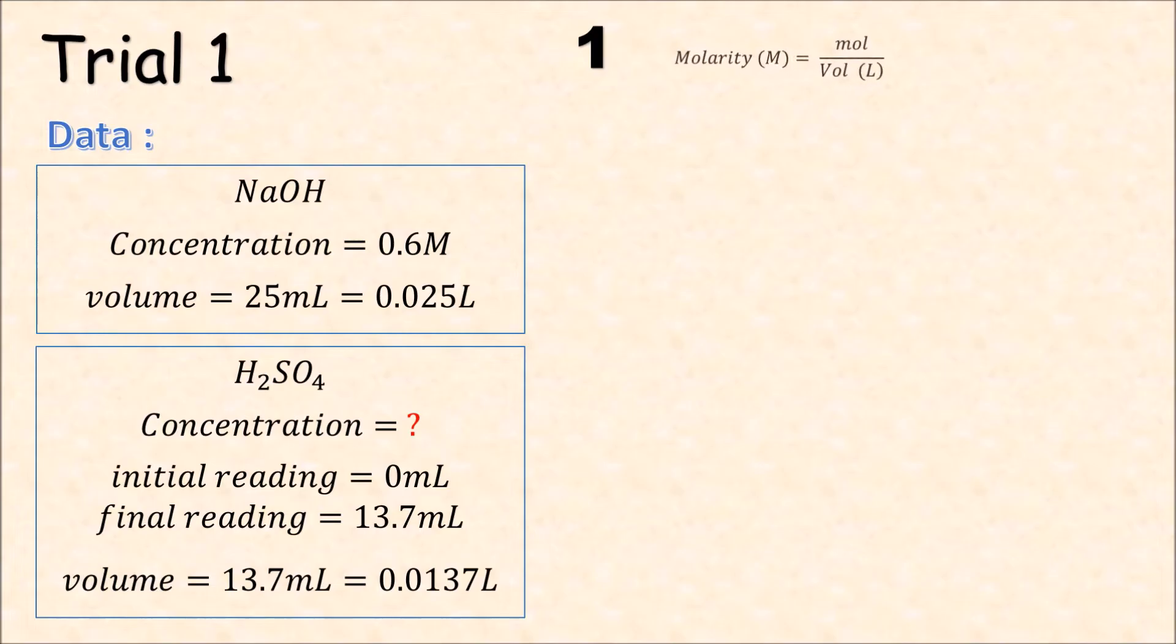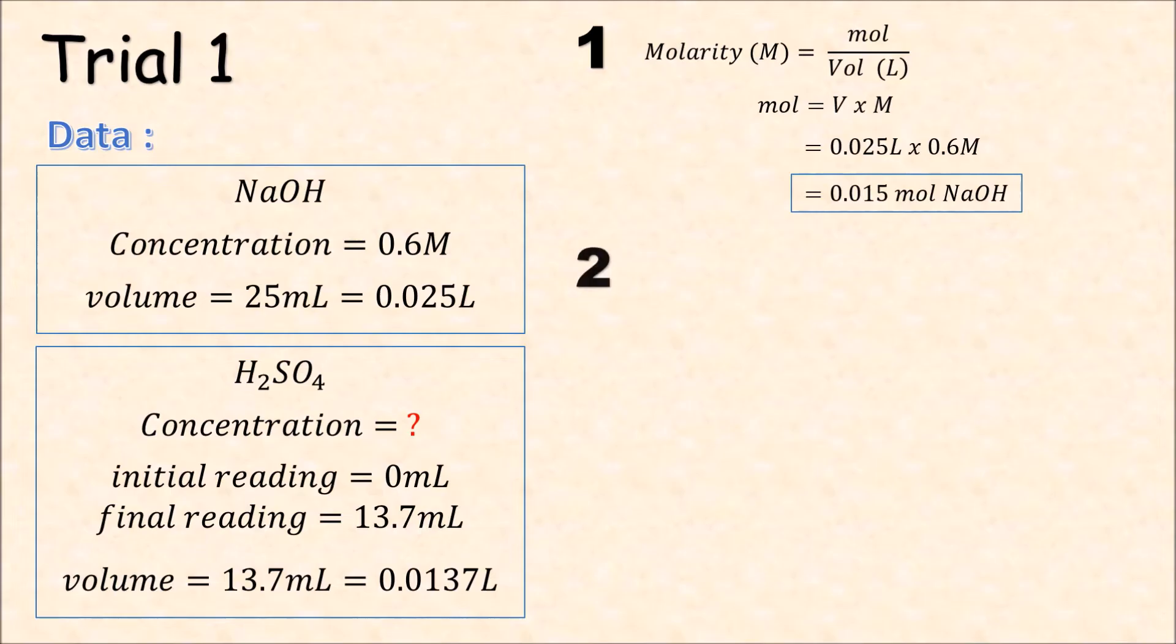Step 1: if the molarity is equal to mol over volume in liters, we can get the mol of the NaOH, which is 0.025 liter times 0.6 molar, which is 0.015 mol of sodium hydroxide.